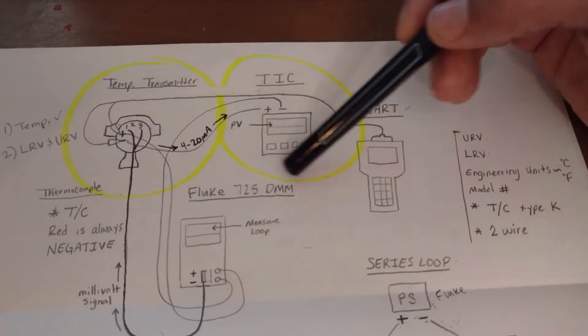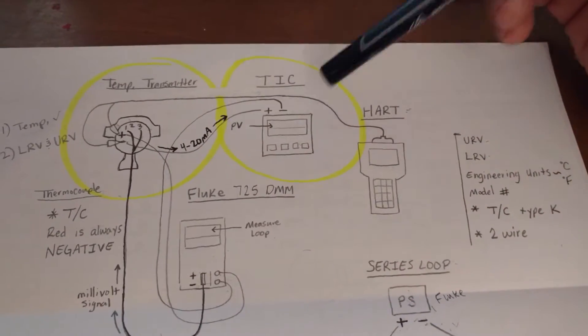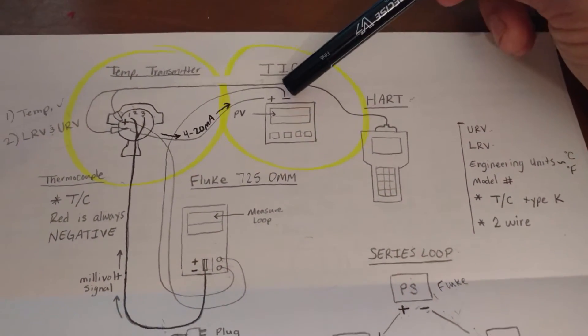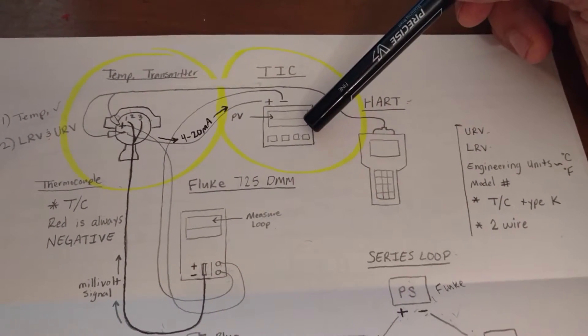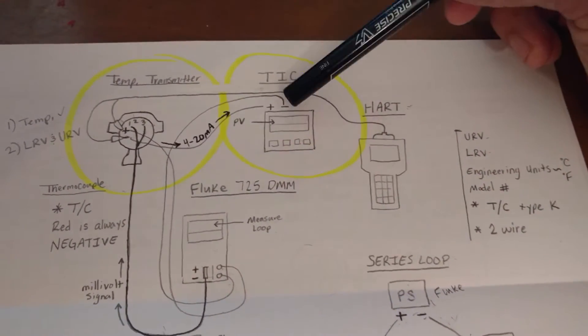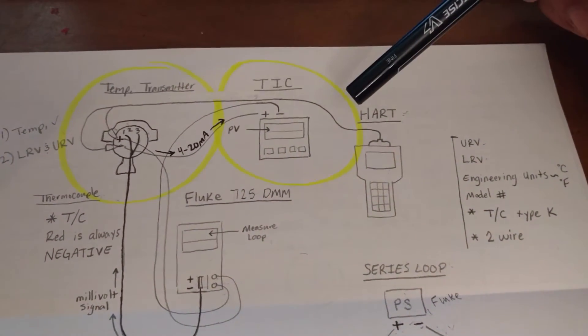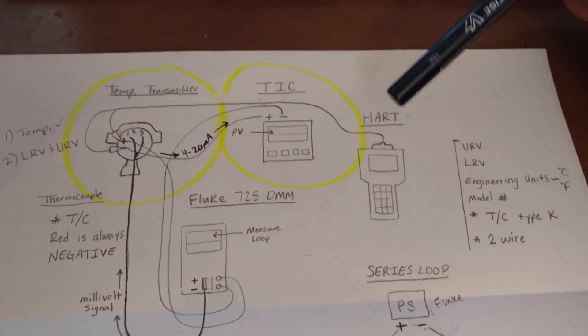And this device is going to have an upper range value and a lower range value programmed as well. And it's going to be able to display some type of a value that's based on this 4 to 20 milliamp signal and its upper and lower range values.